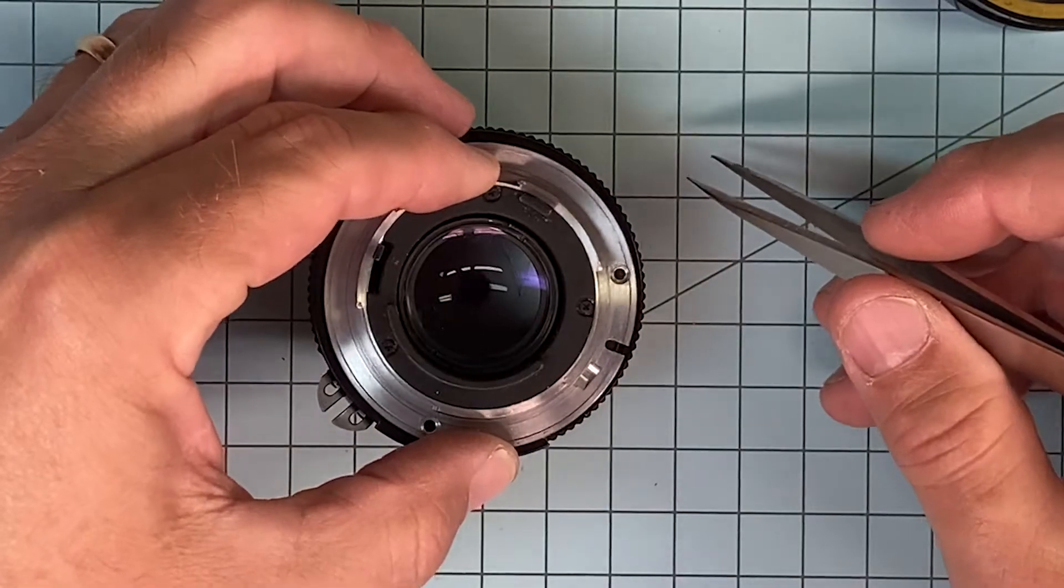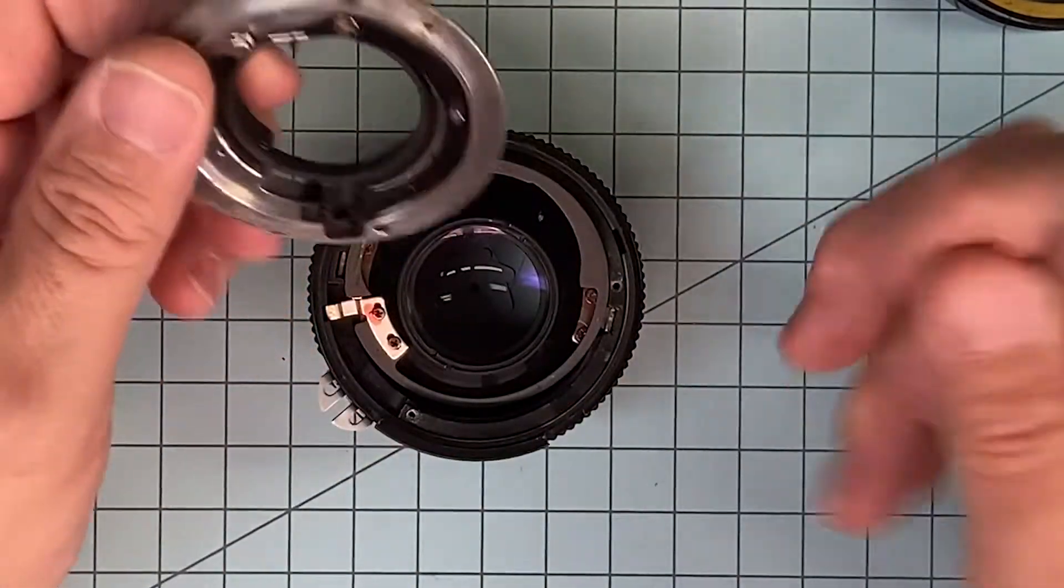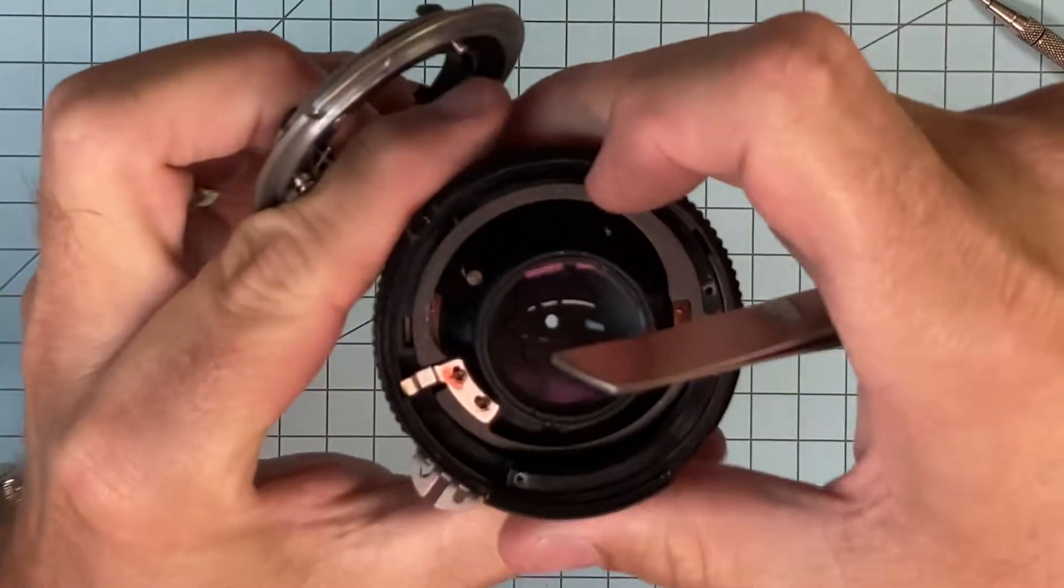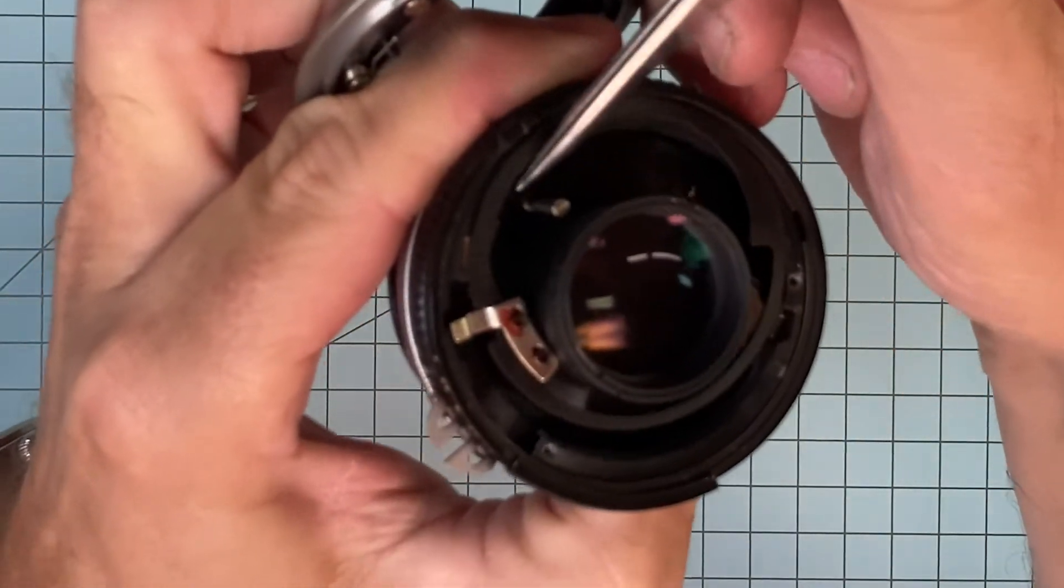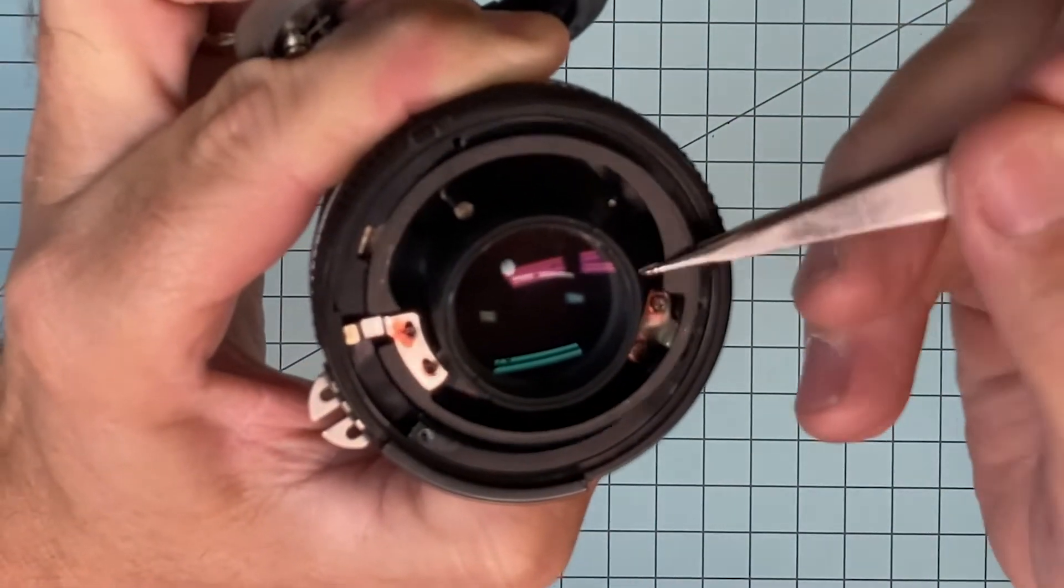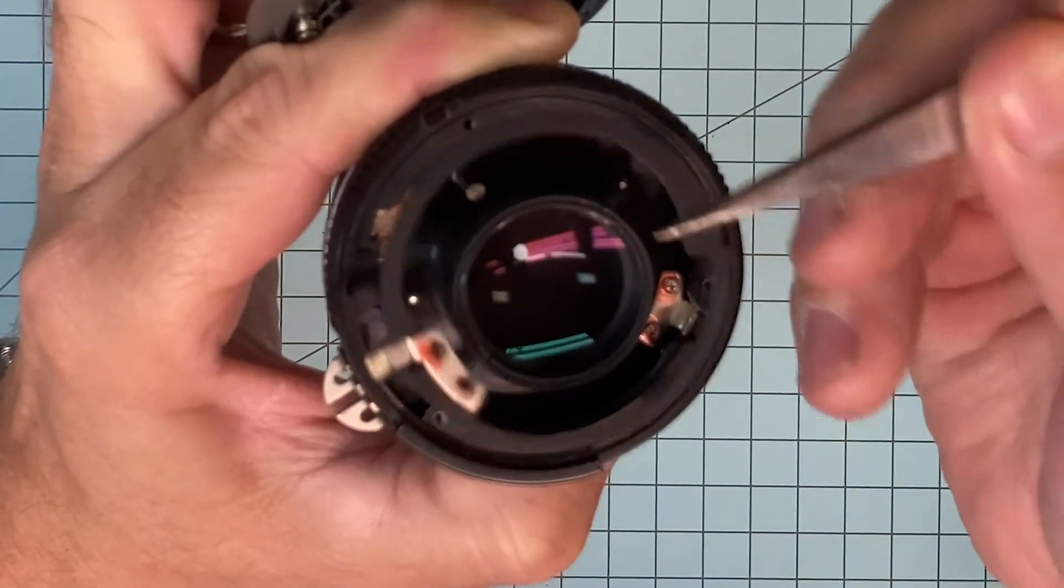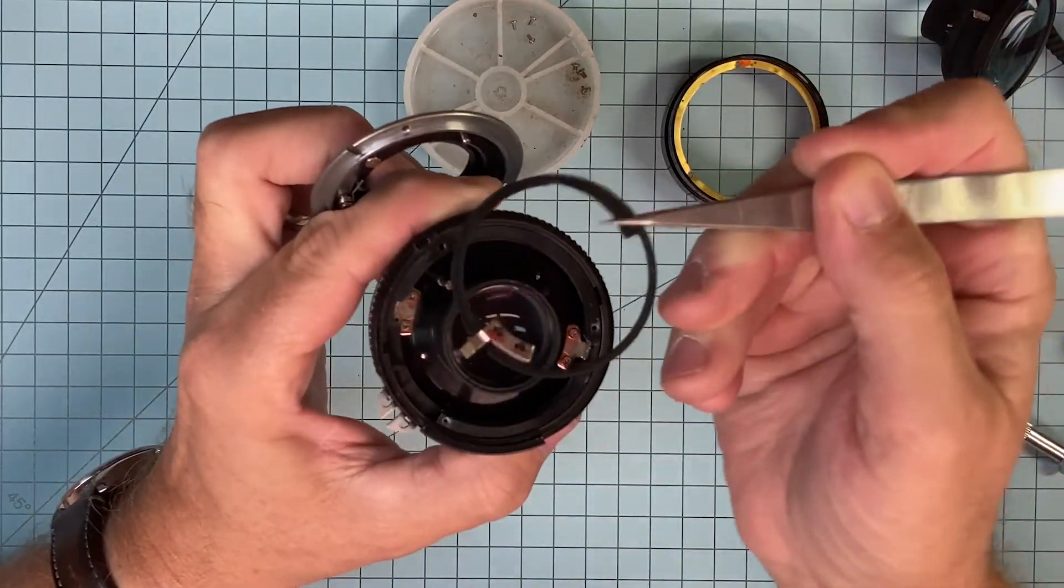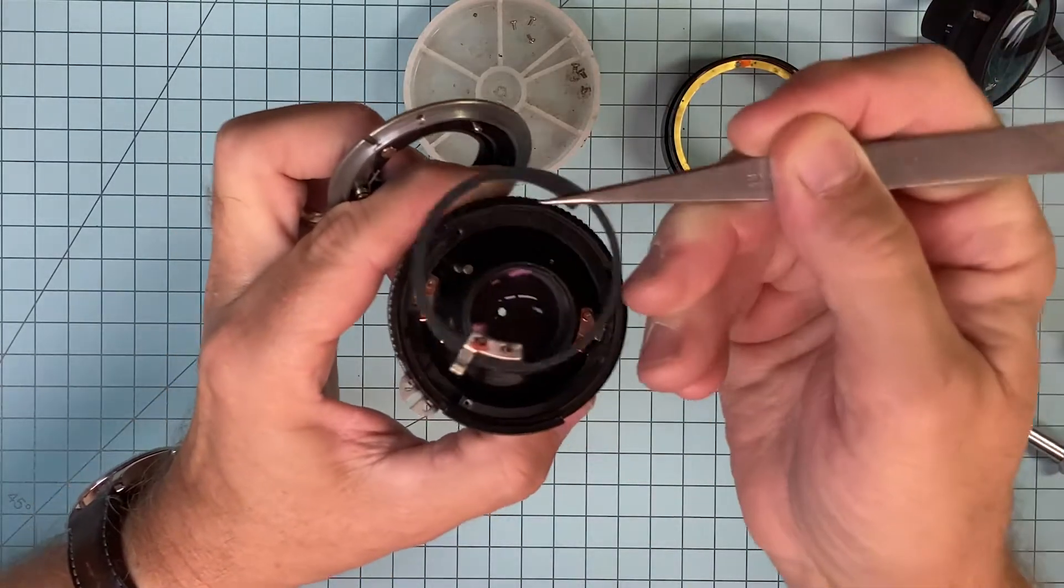Mount comes up. That coupler there needs to go around that shaft right there, otherwise you get no diaphragm action. This is your f-stop ring. Make sure it goes in this direction and not upside down. It'll go in both ways. It won't work that way, it'll work this way.